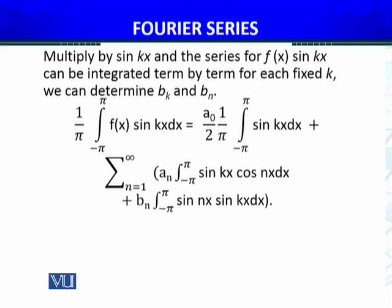Similarly, if I have to determine the expression of b_n, I take the Fourier series expression for f(x). Throughout the equation, I will multiply by sin(kx) and integrate from minus π to π, as we did to determine a_k.